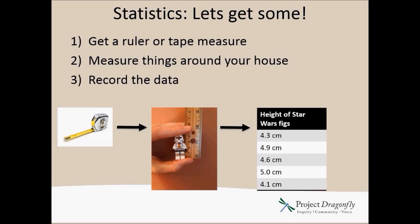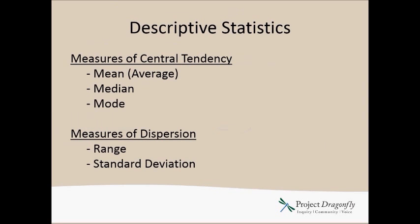Get a ruler or a tape measure, measure things around your house, and record the data in a notebook or spreadsheet. This can be a lot of fun — my seven-year-old son was intrigued when I started measuring his Star Wars Lego figurines just to get some data and start thinking about how we summarize it. Once you have data, you can summarize it using measures of central tendency — the center of the data — which include mean or average, median, and mode. These three M's you may remember from previous classes.